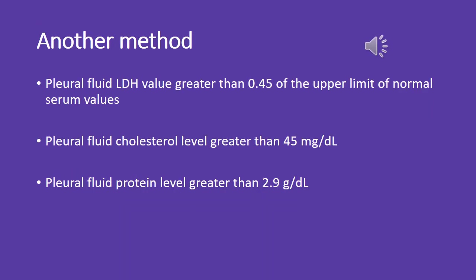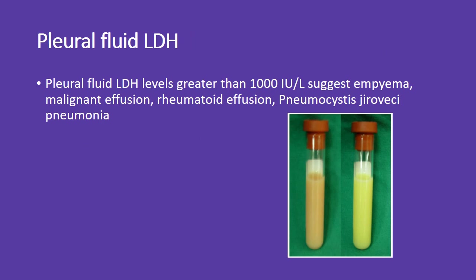Another method for differentiation: pleural fluid LDH value greater than 0.45 of the upper limit of normal serum values; pleural fluid cholesterol level greater than 45 mg/dL; or pleural fluid protein level greater than 2.9 g/dL. Pleural fluid LDH levels greater than 1,000 IU/L suggest empyema, malignant effusion, rheumatoid effusion, or Pneumocystis jirovecii pneumonia.